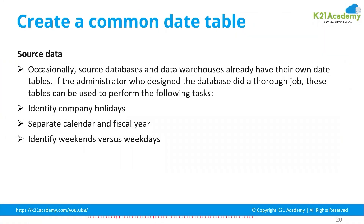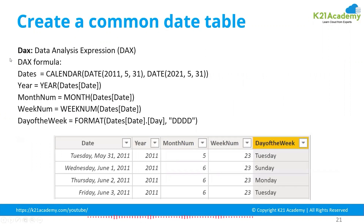To create a common date table, there are two DAX functions: CALENDAR and CALENDARAUTO. If you use CALENDAR, you create a Gregorian calendar. CALENDARAUTO is used for fiscal year scenarios. The output typically includes Year, Month Number, Week Number, and Day of the Week columns.